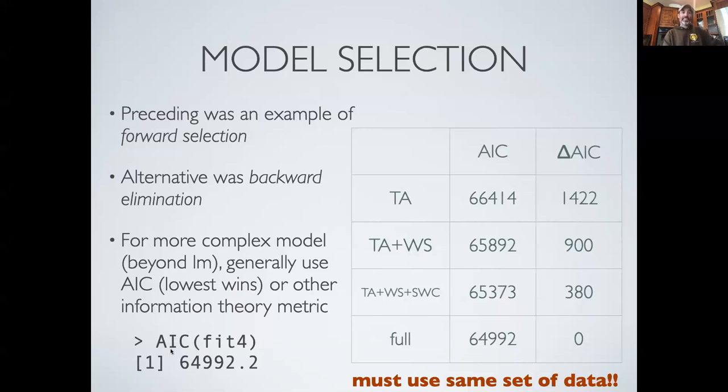Also noting that within R, you can get the AIC from any linear model by just passing the linear model object that came out of the fit to the AIC function. So it's capital AIC and it gives you that AIC score. So pretty handy, pretty simple. And again, low score wins.